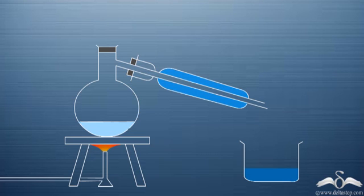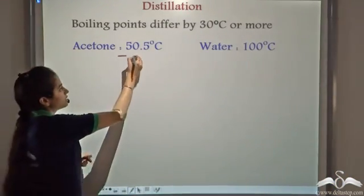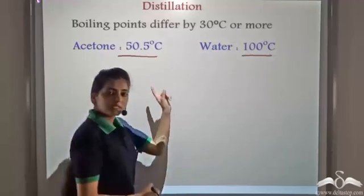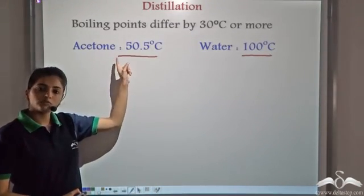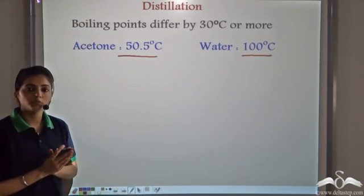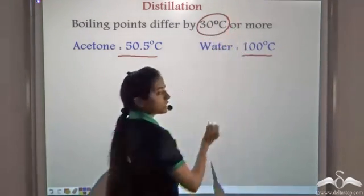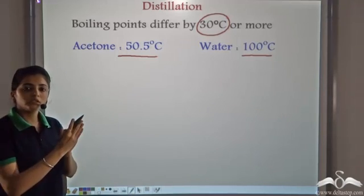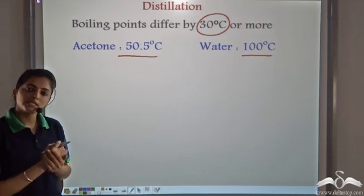This is the process of distillation, in which we heat the miscible solution. For example, acetone and water — the boiling point of acetone is 50.5°C and that of water is 100°C, so the difference is large and we can use distillation. Distillation is used when the difference in boiling points between the two liquids is more than 30°C. But what happens if the difference is less than 30°C?